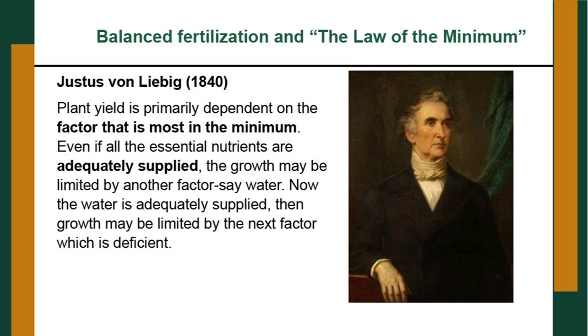Balanced fertilization was first proposed by Justus von Liebig from Germany in 1840 in the form of the Law of Minimum. What is the Law of Minimum? Plant yield is primarily dependent on the factor that is most in the minimum. Even if all essential nutrients are adequately supplied, growth may be limited by another factor — say water. Once water is adequately supplied, growth may then be limited by the next deficient factor. This law is very important and is the basis for balanced fertilization, relevant even today. It suggests that the strength of a chain is decided by its weakest link.